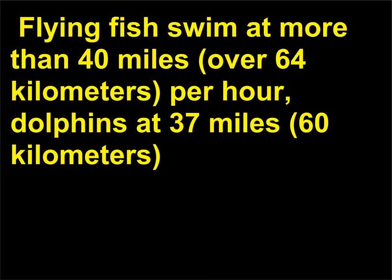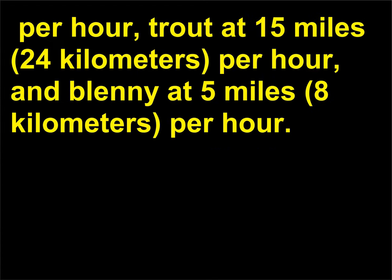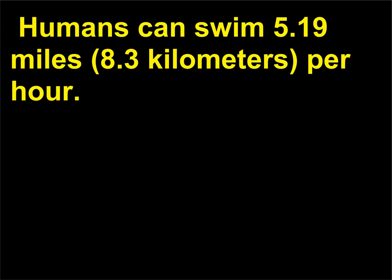Flying fish swim at more than 40 miles (over 64 kilometers) per hour, dolphins at 37 miles (60 kilometers) per hour, trout at 15 miles (24 kilometers) per hour, and blenny at 5 miles (8 kilometers) per hour. Humans can swim 5.19 miles (8.3 kilometers) per hour.